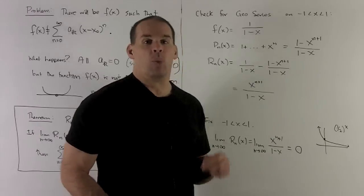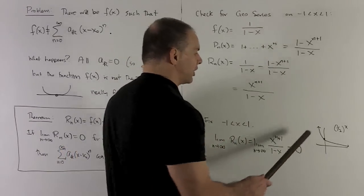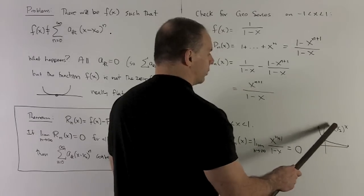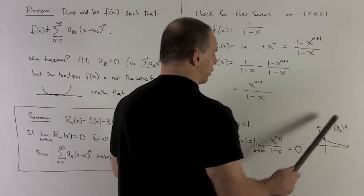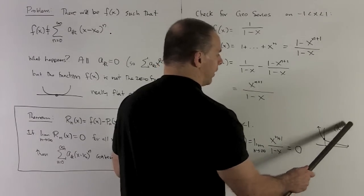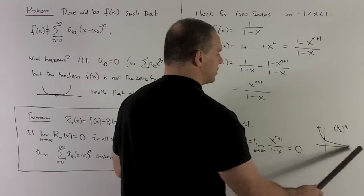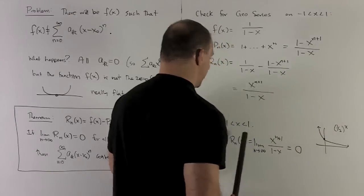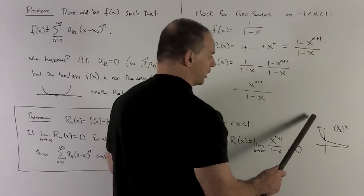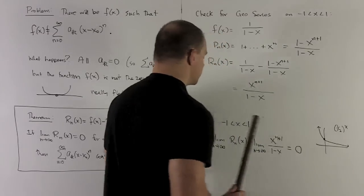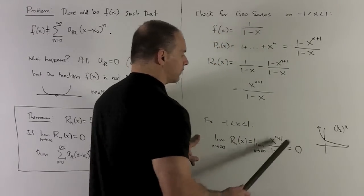Then here we're looking at something like x to the n plus one. Think of x being, say, one half. Then the shape of this graph is going to be, for one half to the x, and note the x here has nothing to do with this x. One half to the x is going to be shaped like this. So one half to the n, as I go out to infinity, is going to get driven down to zero. So the limit here is going to go off to zero.